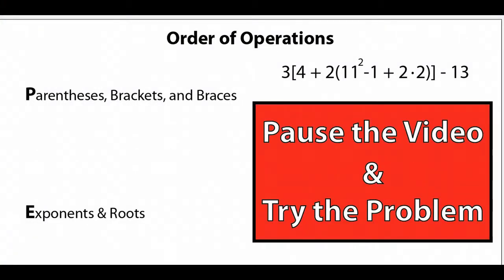Great job on the last one. So here's another example for you to work on. We have 3 times the quantity 4 plus 2 times the quantity 11 squared minus 1 plus 2 times 2, all minus 13. So go ahead and pause your video and try and solve the problem.